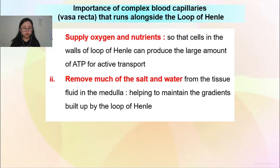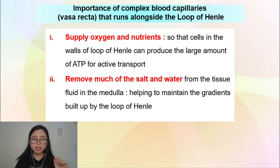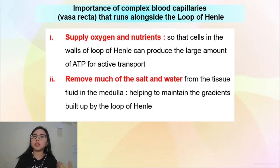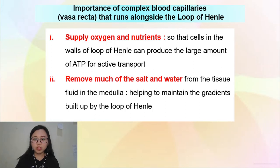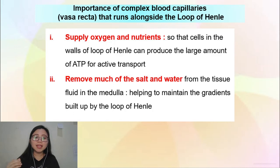There's one more thing we need to focus on — the importance of the blood capillary around the loop of Henle. Vasa recta is the blood capillary that runs alongside the loop of Henle. Its first importance is that it supplies oxygen and nutrients so that the cells in the wall of the loop of Henle can produce large amounts of ATP for active transport. The vasa recta also removes much of the salt and water from the tissue fluid in the medulla, helping to maintain the gradients built up by the loop of Henle.